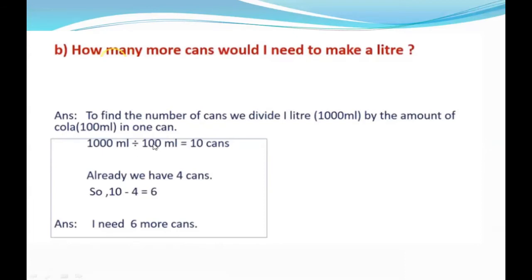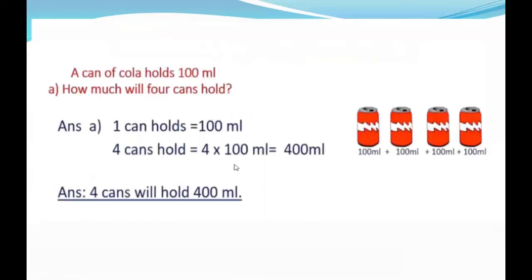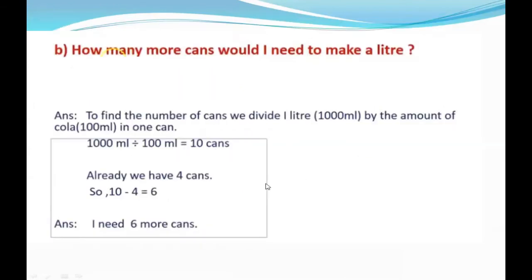So if I divide 1000 by 100, two zeros and two zeros cancel—I need only 10 cans. But we already have four cans from the previous part. See, we already have four cans. So we already have four cans. How many more do we need? 10 minus 4 gives 6 more cans I need.